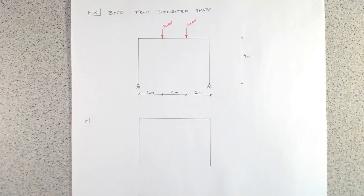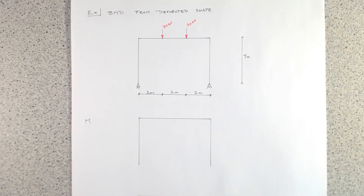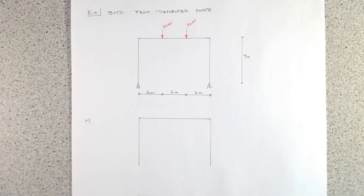In this video we are going to use the skills we developed in previous videos to draw some deflected shapes of structures and use those deflected shapes to identify the bending moment distribution, so we can draw a bending moment diagram. This is intended to be an intuitive understanding of how structures behave. By plotting on the tension side we know what side the moment is on, and then from the types of loading — point loads, distributed loads, etc. — we can determine the distribution of the bending moment diagram and work out expected shears and axial forces.